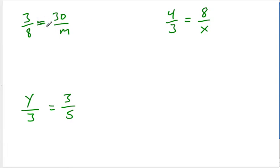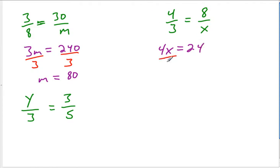In this first one, we can say three times m is going to equal thirty times eight. Then we can use that to solve for m. We divide both sides by three, and we get m equals eighty. Over here, four times x is going to equal eight times three. Using the division property of equality, we can see that x is going to equal six.